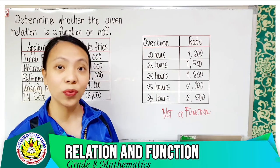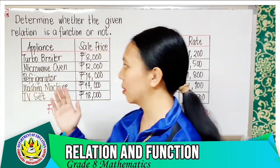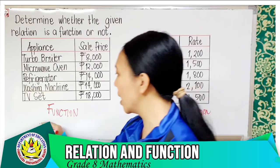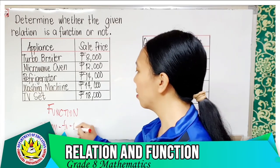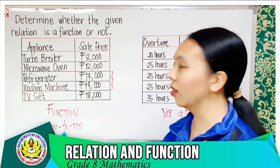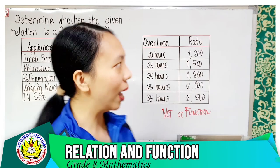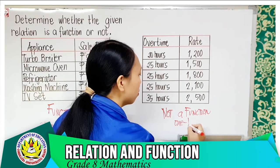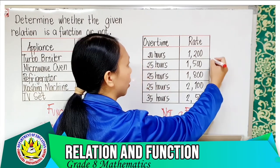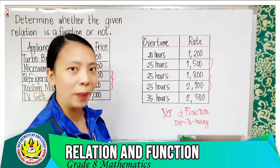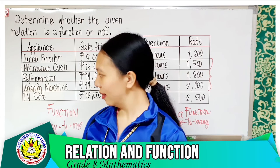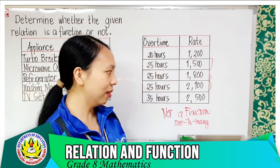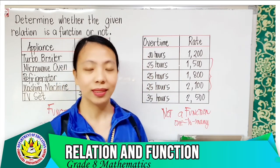Let's determine what kind of correspondence is shown. For the appliances set, each appliance corresponds to exactly one price — that is a many-to-one correspondence, which is a function. For the overtime example, 25 hours is paired to multiple rates — that is a one-to-many correspondence. One-to-one and many-to-one = function; one-to-many = not a function.